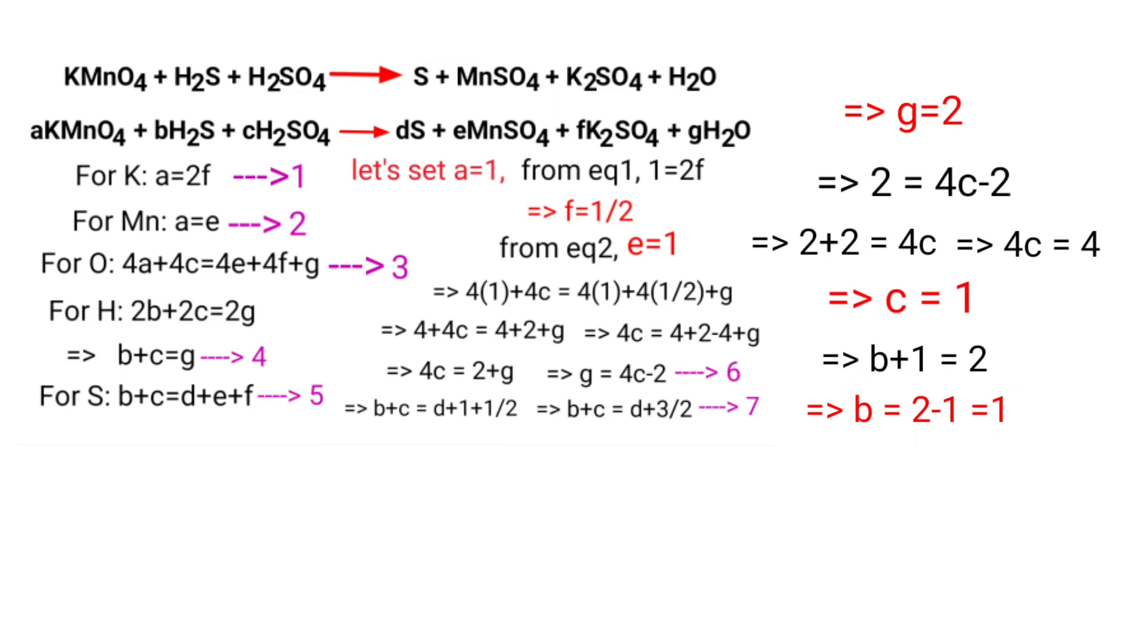Now apply the b and c values in equation 7. Then 1 plus 1 equals d plus 3/2. Then 2 equals d plus 3/2. Then d equals 2 minus 3/2, that is equal to 4 minus 3 by 2, so d equals 1/2.